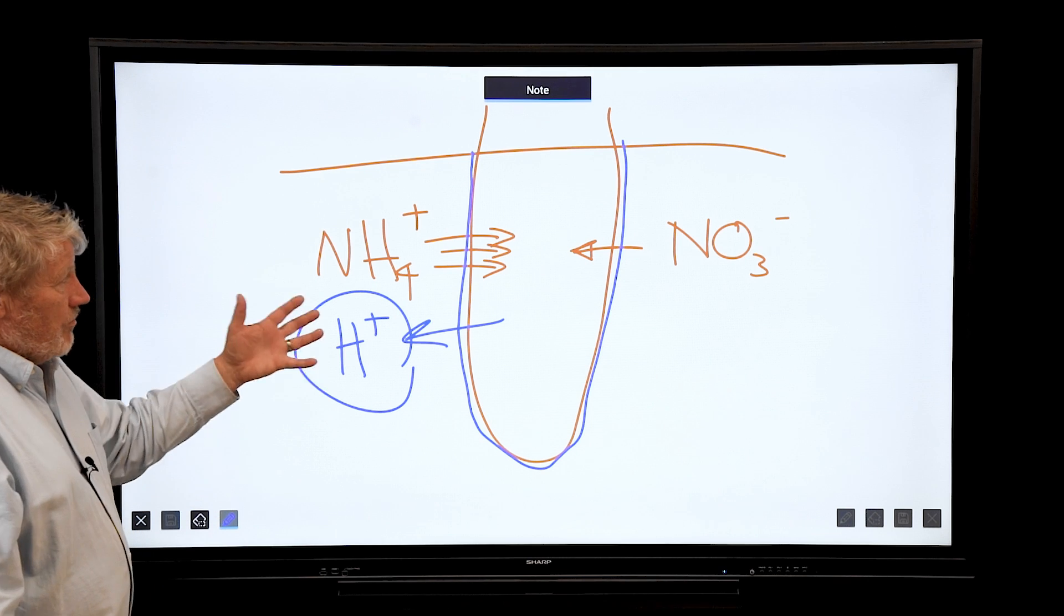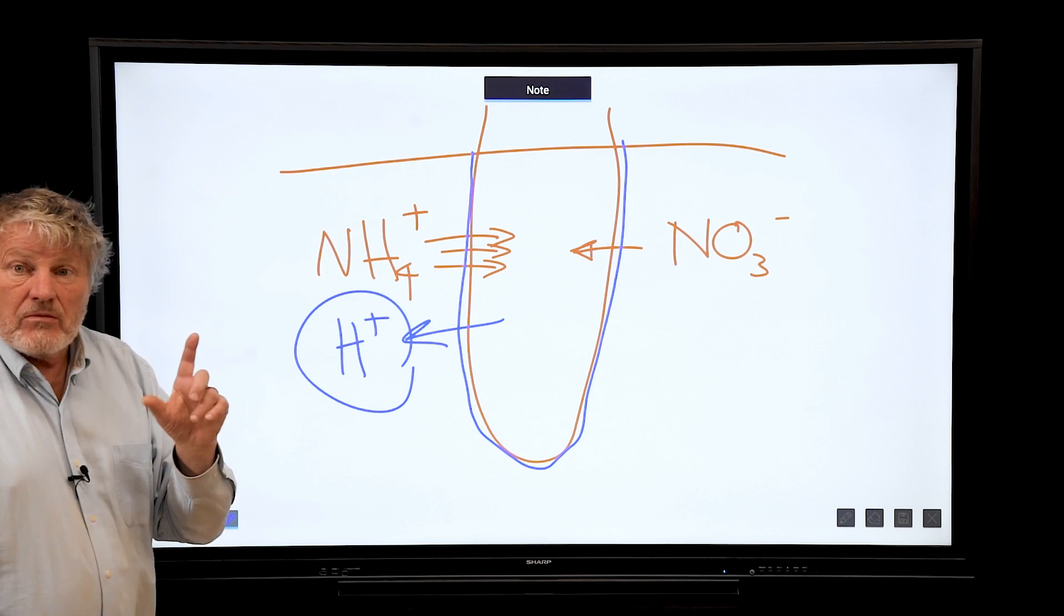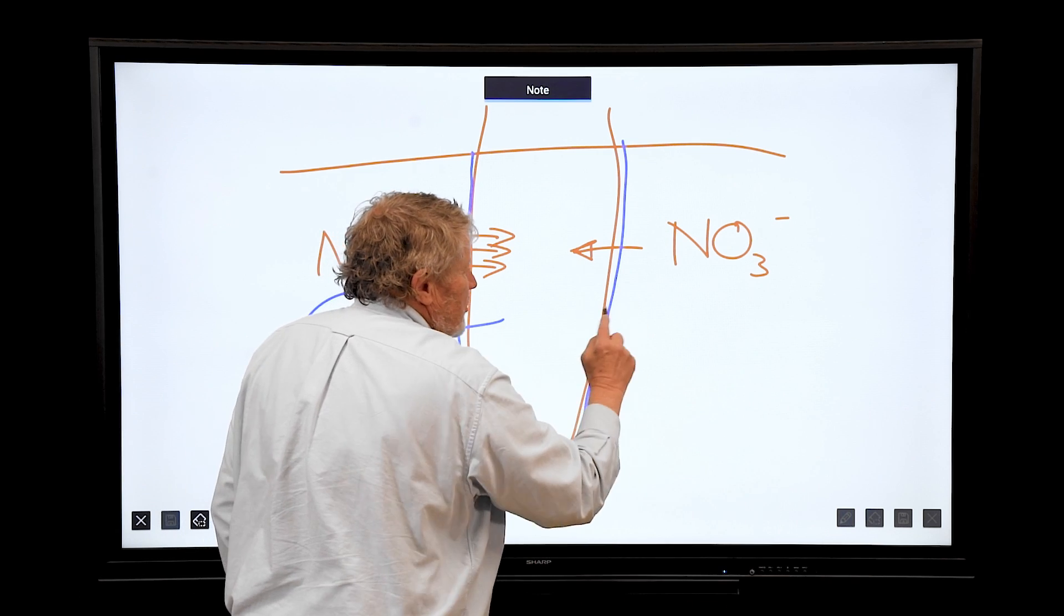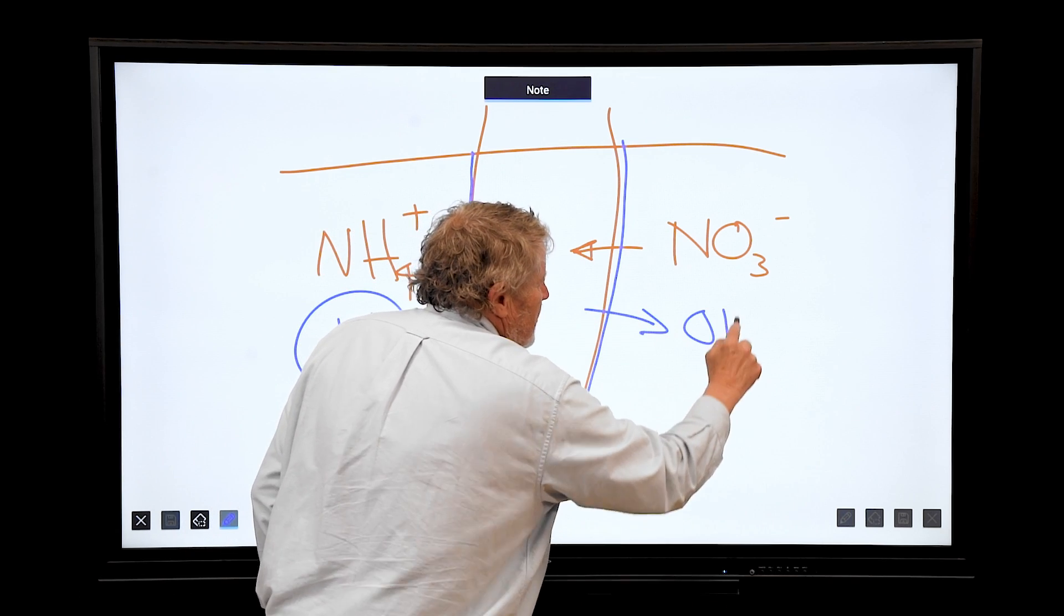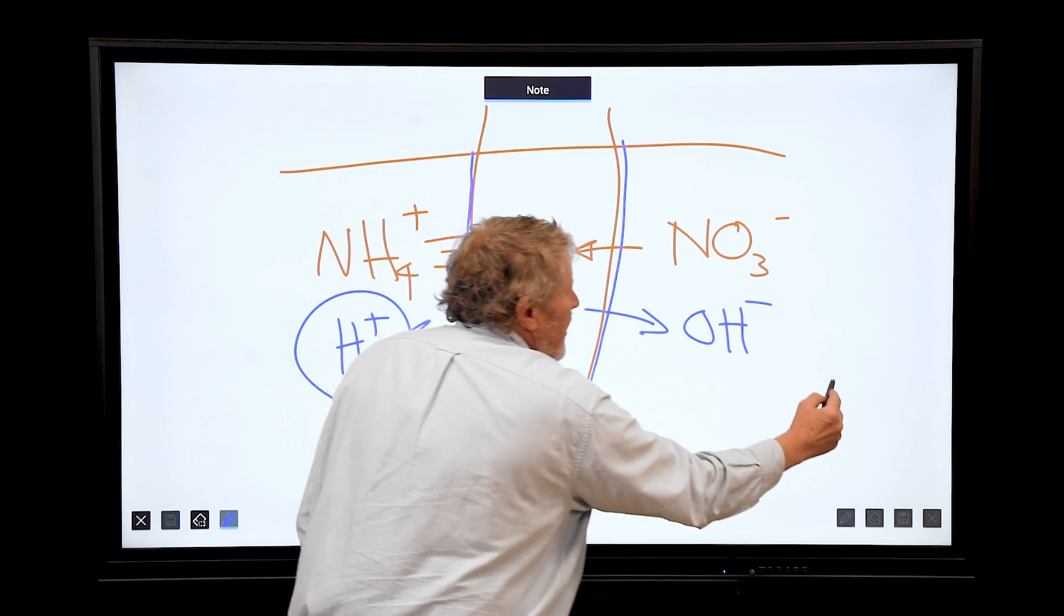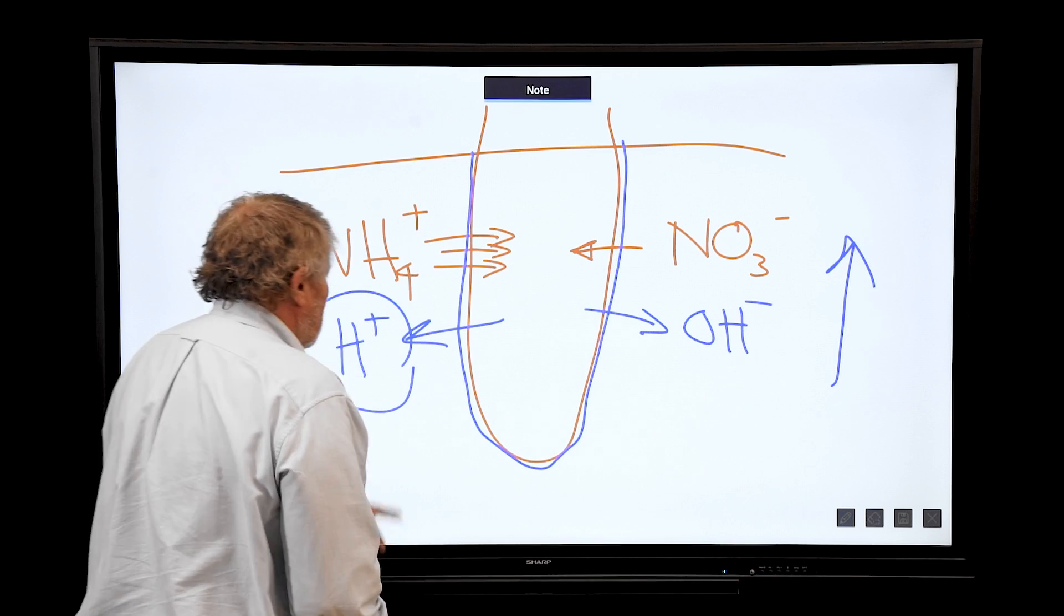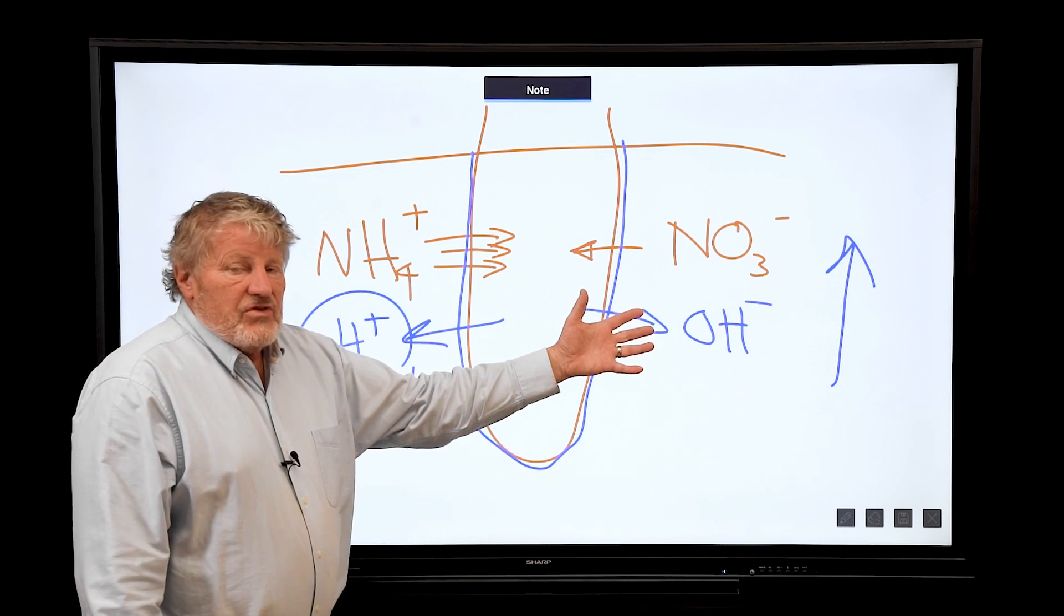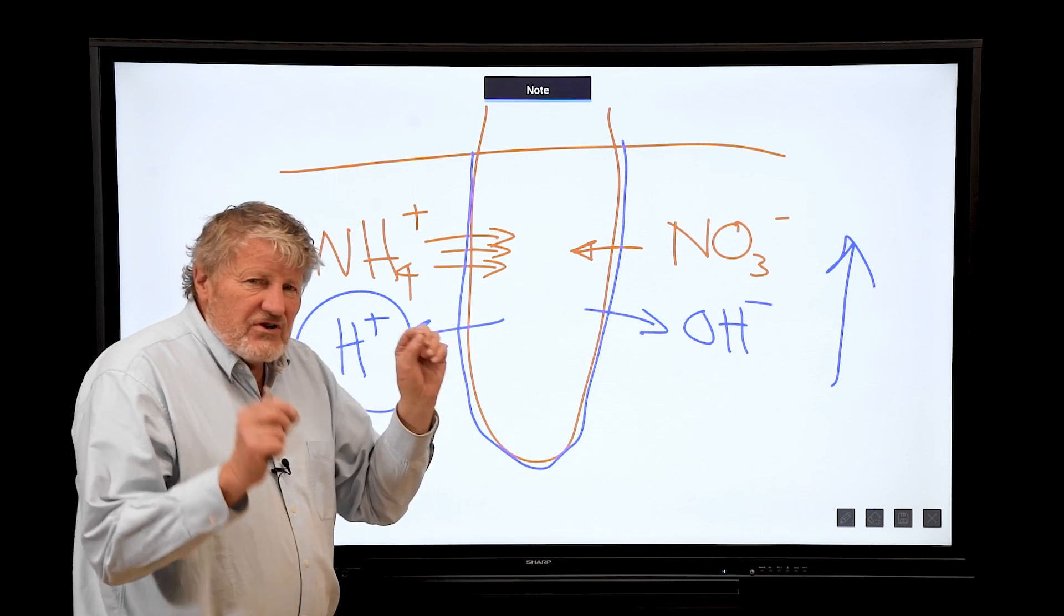So ammonium makes the pH go down. But that same principle happens over here with nitrate. Nitrate goes in, hydroxide comes out, and the pH goes up. Over here the pH goes down. This is particularly significant in just this one or two millimeter zone right next to the roots.